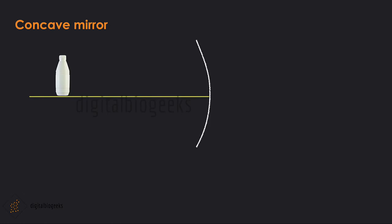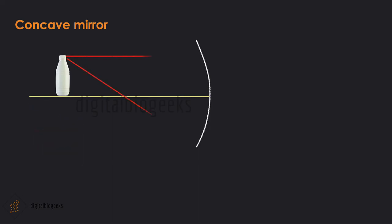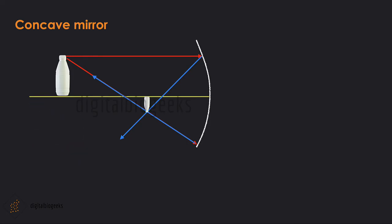The real image formed by a concave mirror is inverted. Virtual images are erect, but real images are inverted. In case of a plane mirror, the reflected rays go away from each other and will not meet at a point. But in case of a concave mirror, the reflected rays meet at a point in front of the mirror. The reflected ray from the top is reflected downward and the ray from the bottom is reflected upward. These rays meet at a point and form an inverted image in front of the concave mirror.